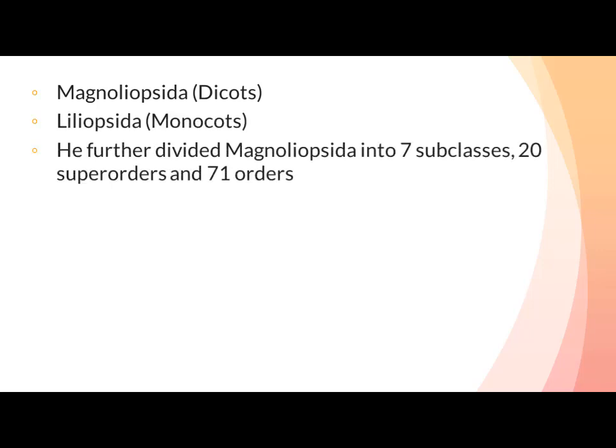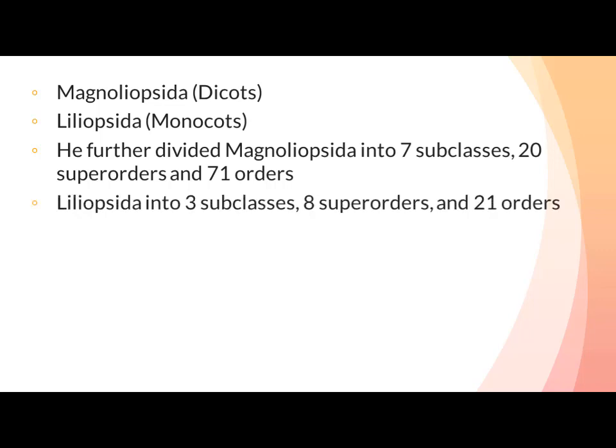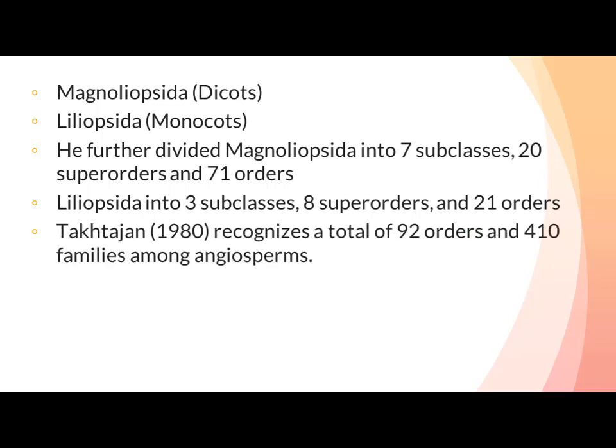Takhtajan further divided Magnoliopsida (dicot plants) into 7 subclasses, 20 superorders, and 71 orders. Liliopsida (monocots) was divided into 3 subclasses and 8 superorders containing 21 orders. In total, Takhtajan recognizes 92 orders and 410 families among angiosperms.